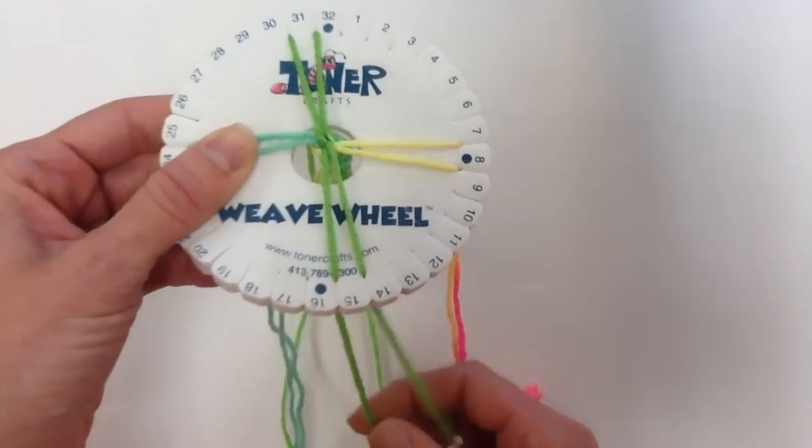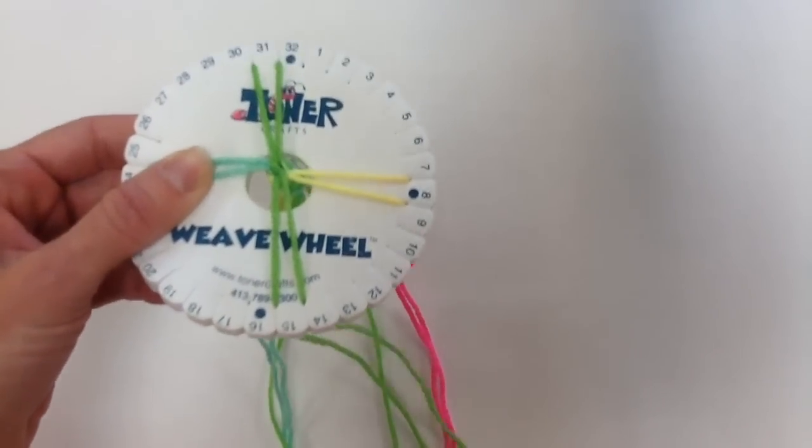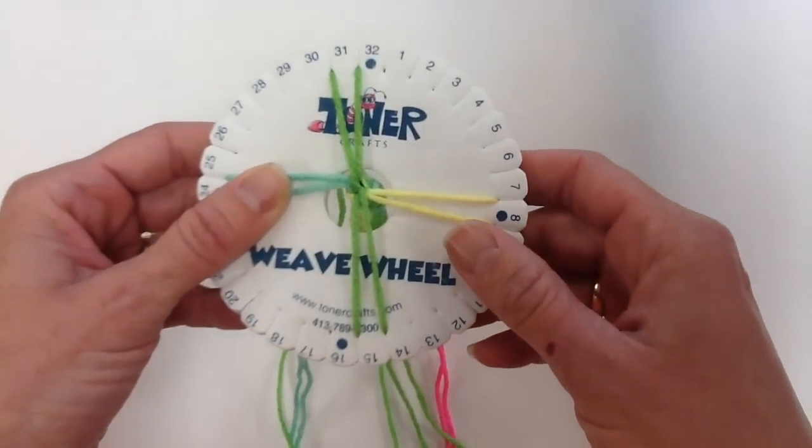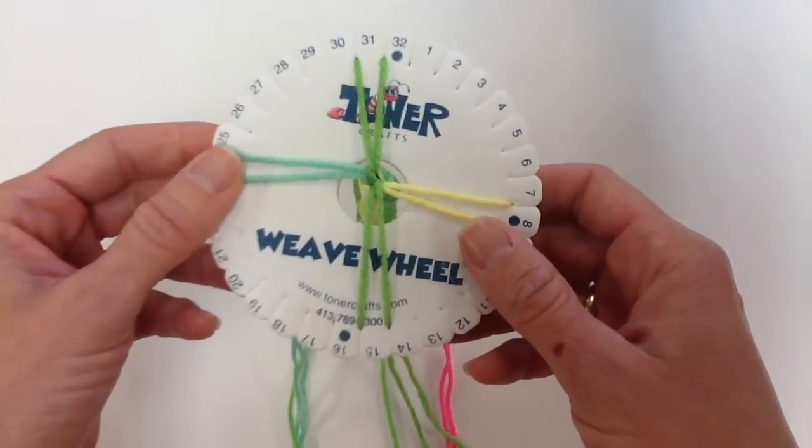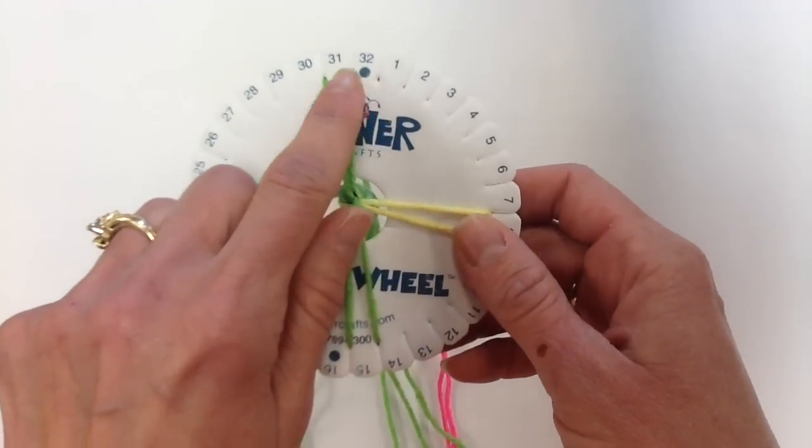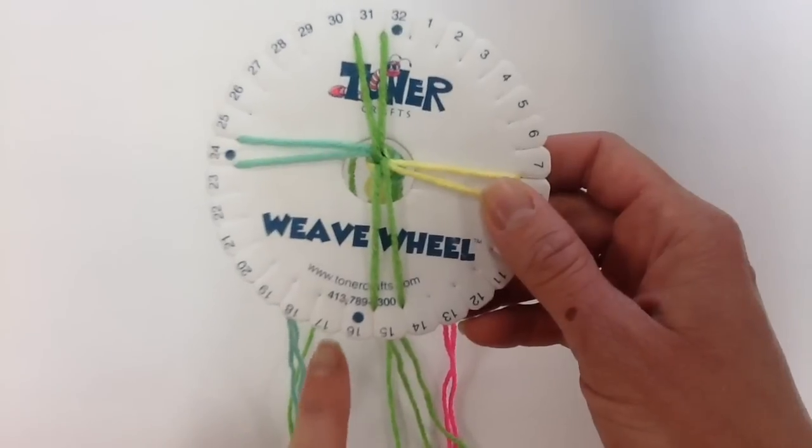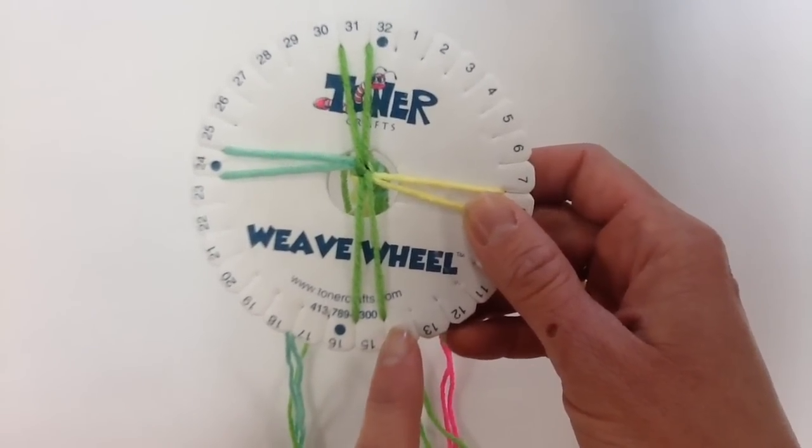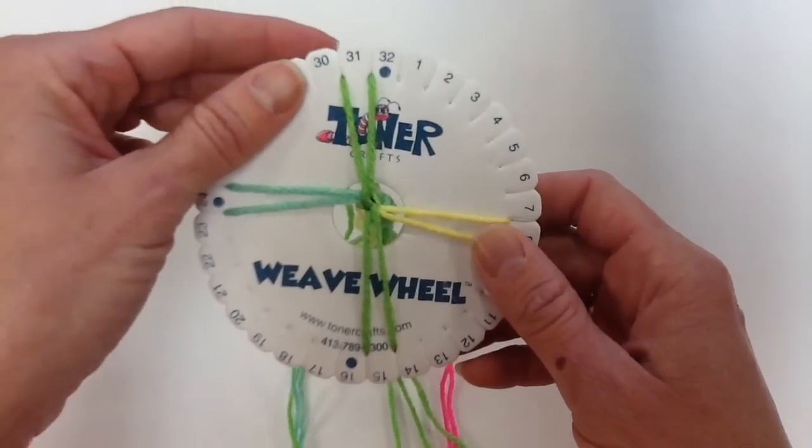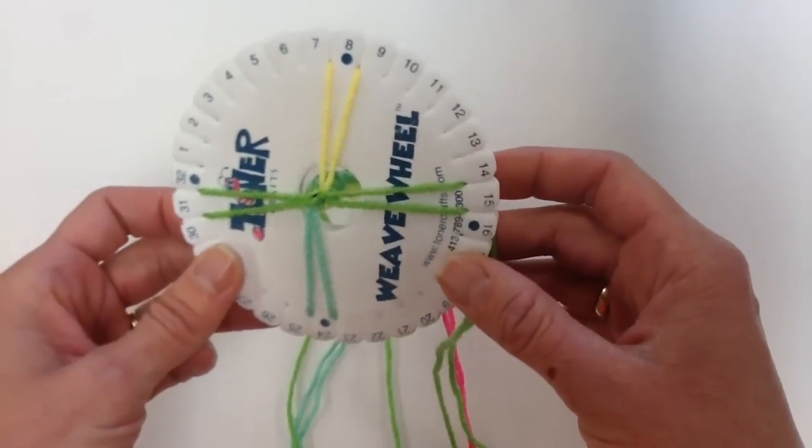One of the trickiest things is keeping your strings from getting tangled underneath the wheel. So you can see how they shifted from here to here and from the dot over one to the right. Now I'm going to turn my wheel counterclockwise so that my 8 is now on top.